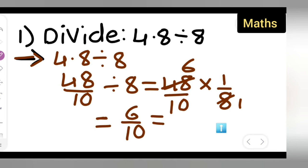Now 6 upon 10 which is equal to 0.6 is your answer. So I hope you all have understood how to divide 4.8 divided by 8 and thanks for watching. If any doubts or queries, you can comment below.